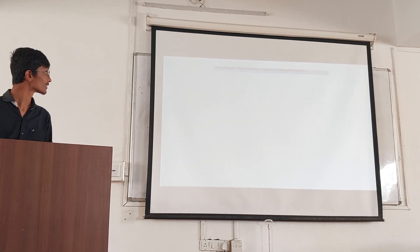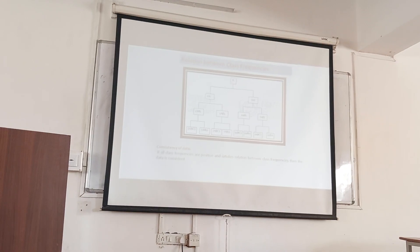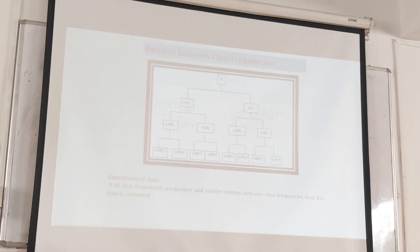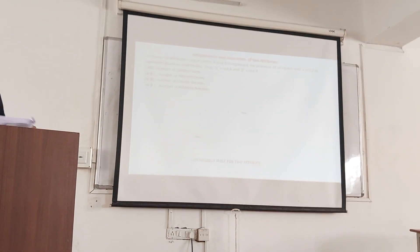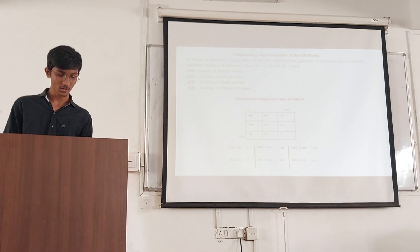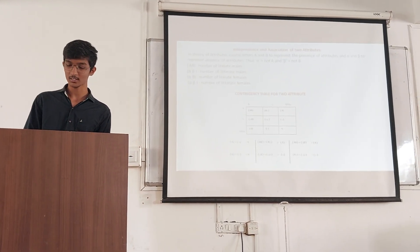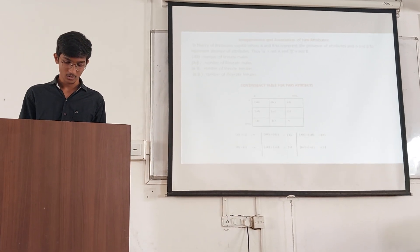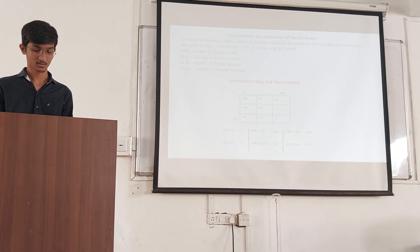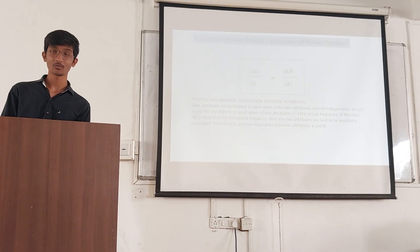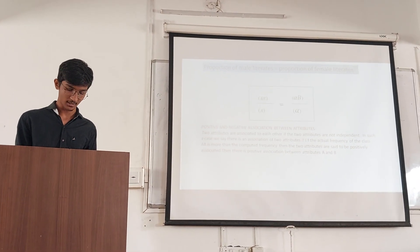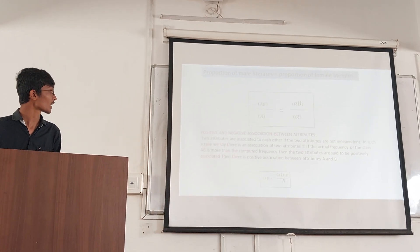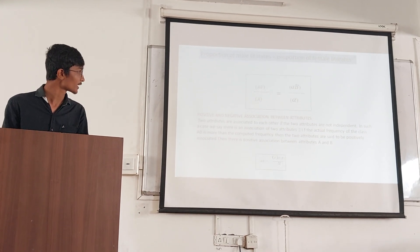Relation between class frequencies: There is a chart of relations between class frequencies. Regarding consistency of data and independence, in the theory of attributes, A and B represent the presence of attributes, and alpha and beta represent the absence of attributes. Thus, alpha is equal to N minus A, and beta is equal to N minus B. Two attributes are said to be independent if there is no association between them.